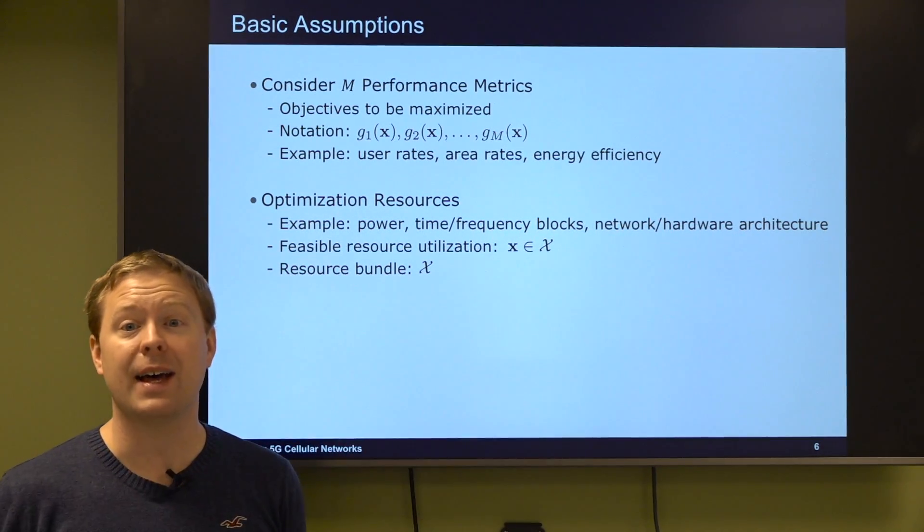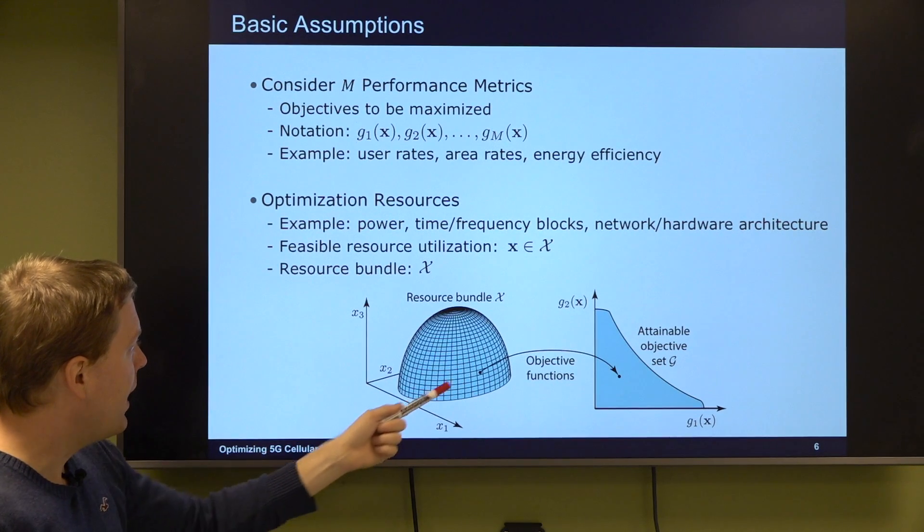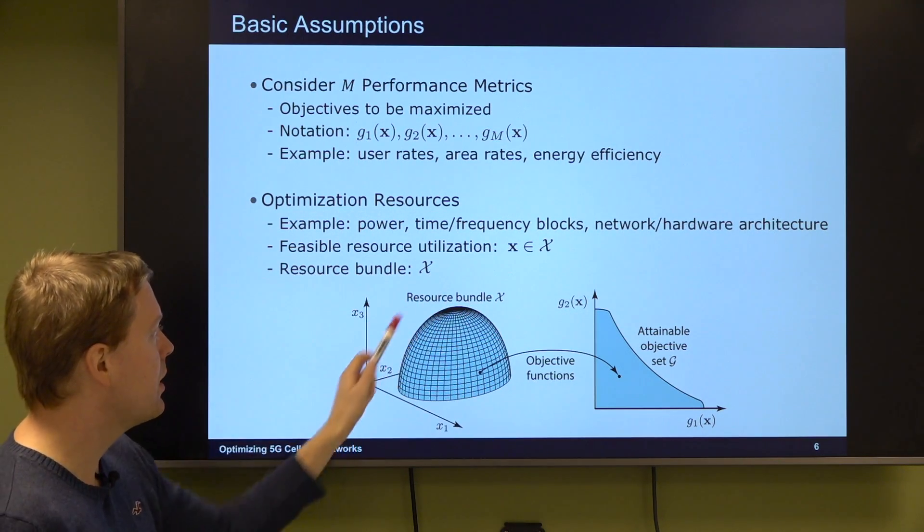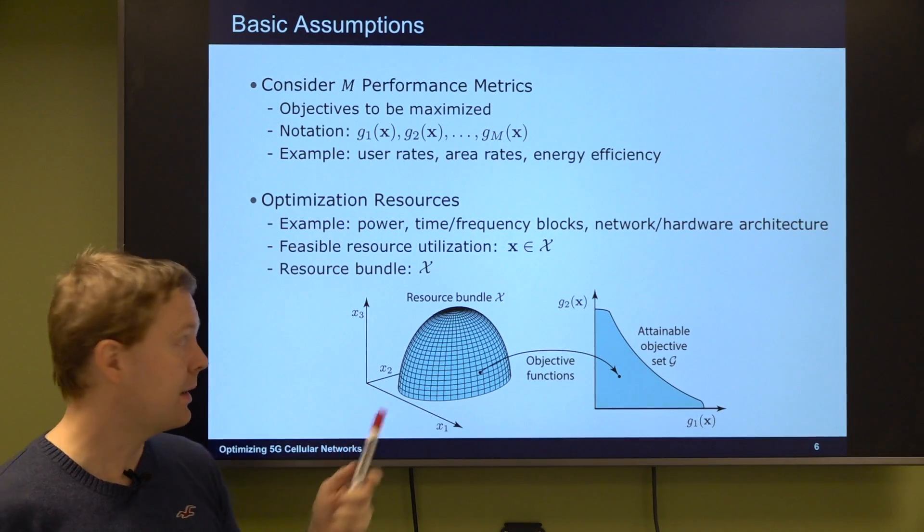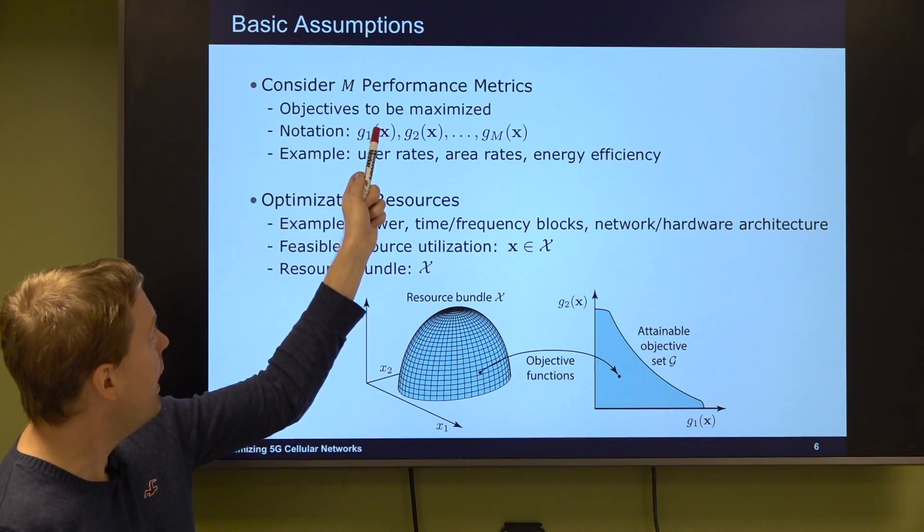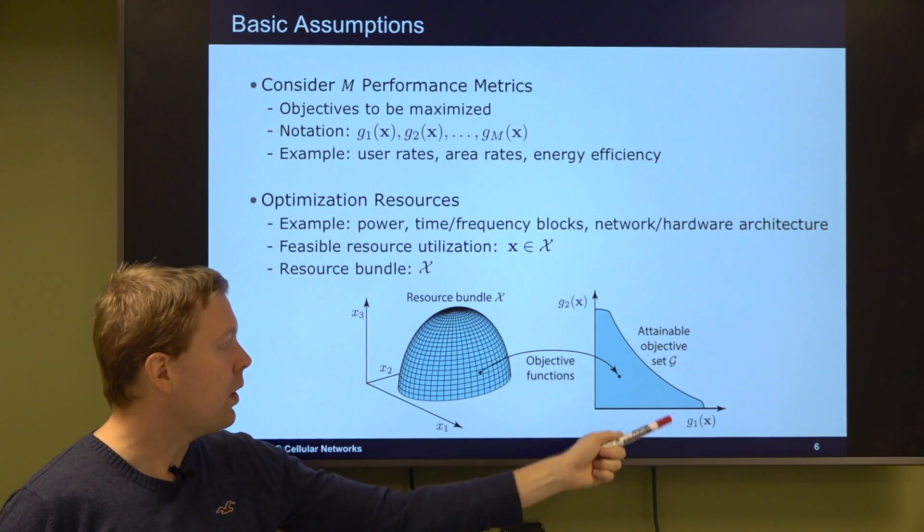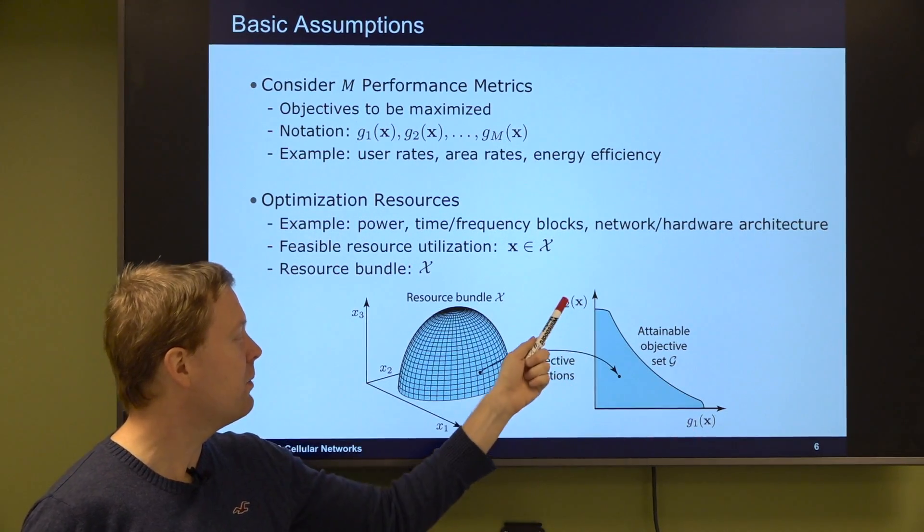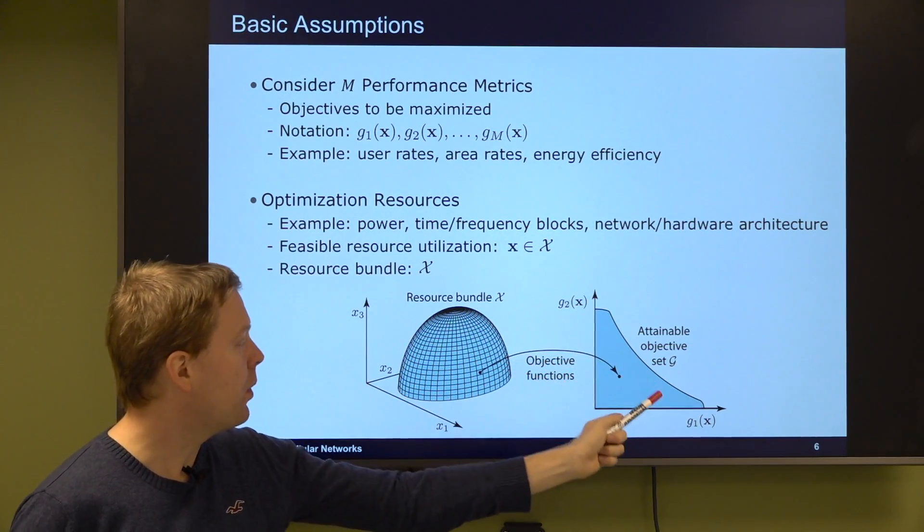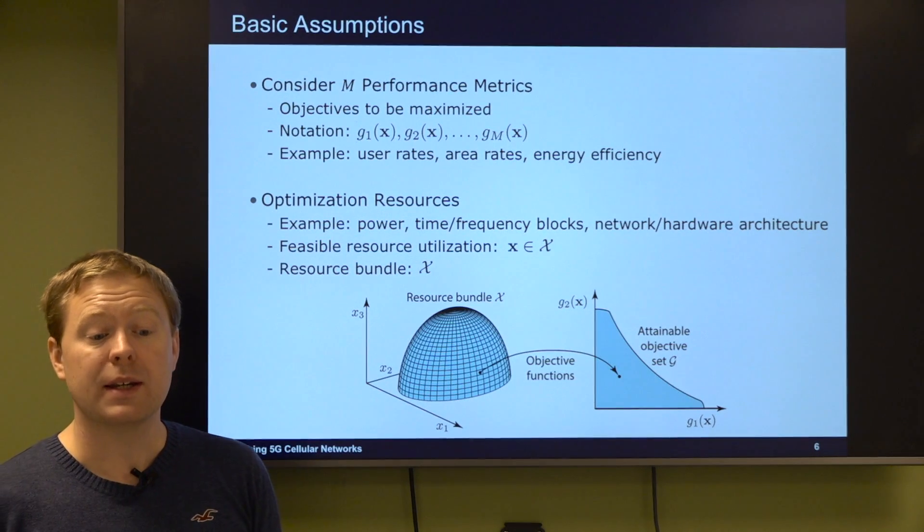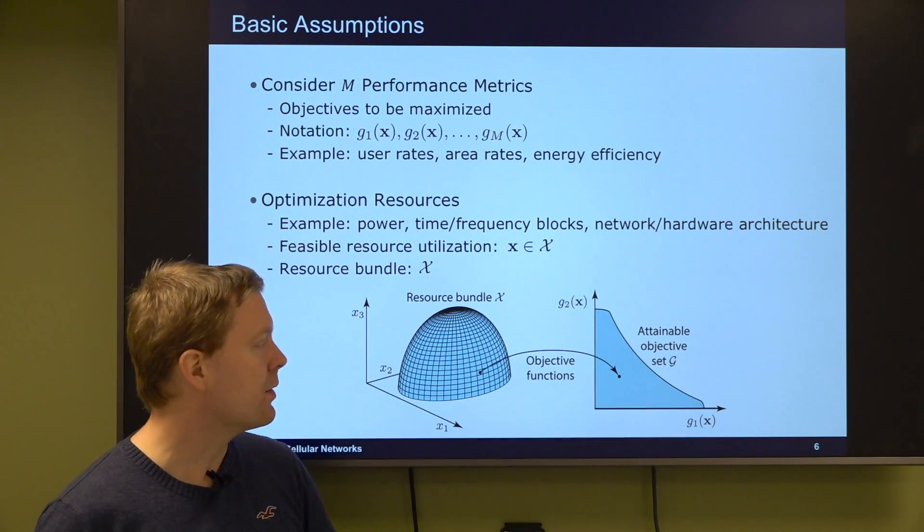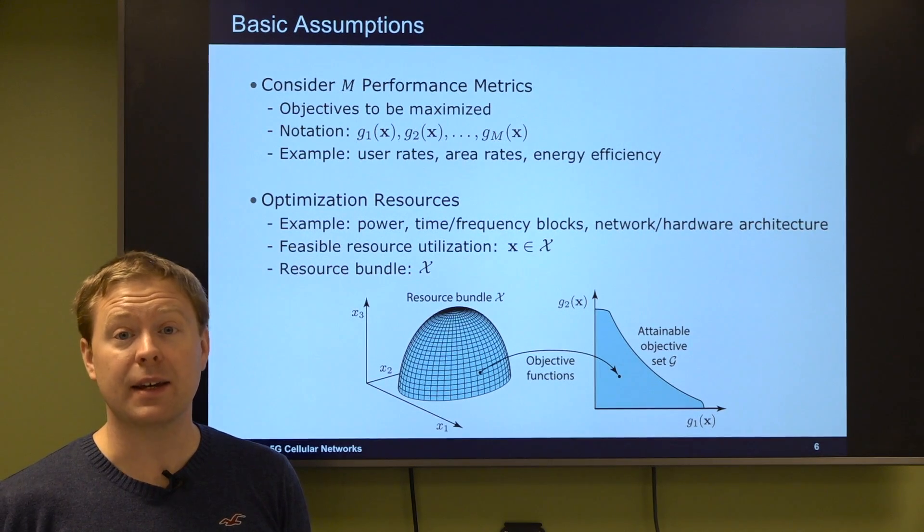Suppose the resource bundle contains three different dimensions x1, x2, x3, then there will be a certain shape of a region of different things that we can select. This is the resource bundle. And for every point here we can compute the values of g1 and g2 and so on. And that gives us an attainable objective set. One value for g1, one value for g2 for every value in the resource bundle.